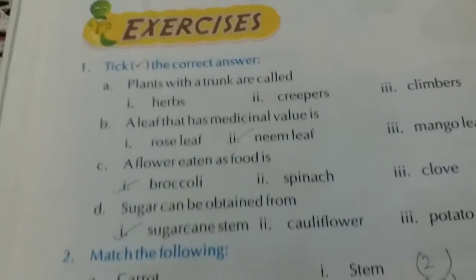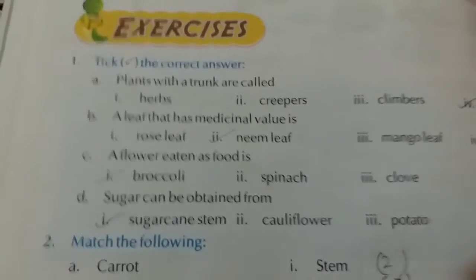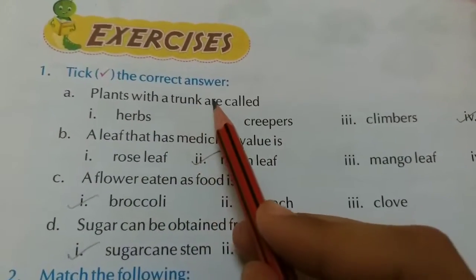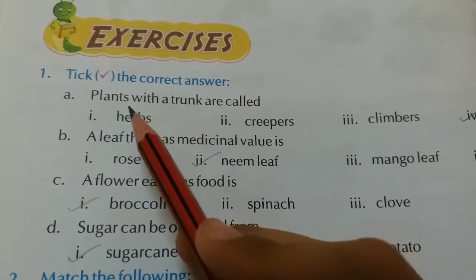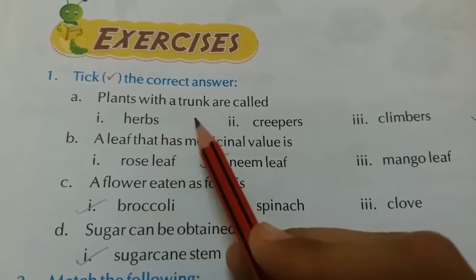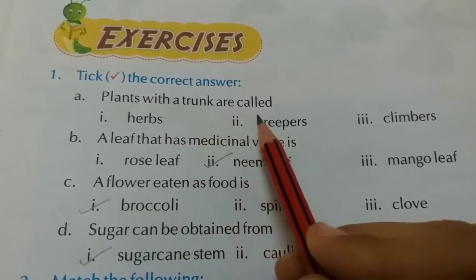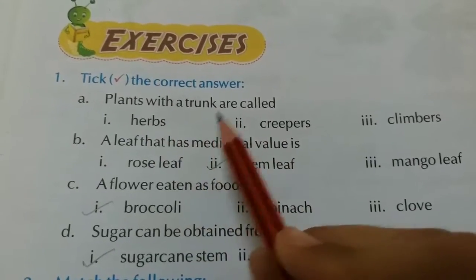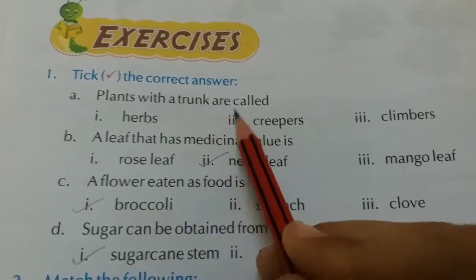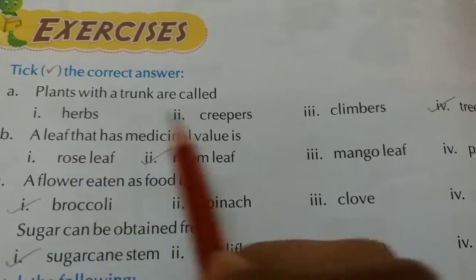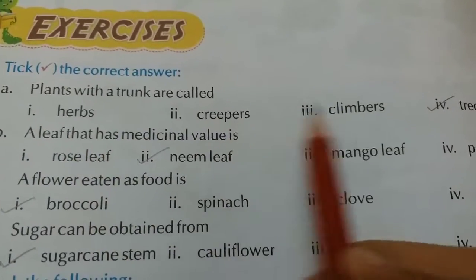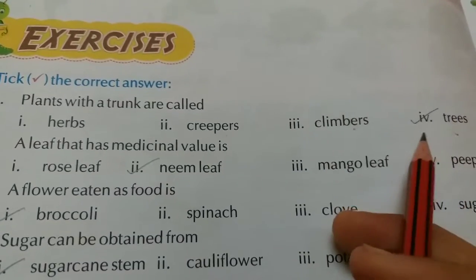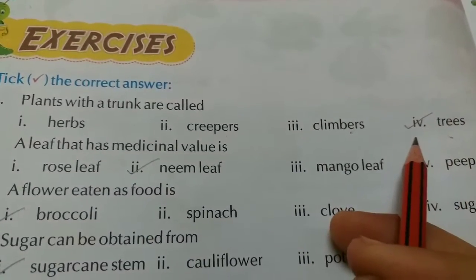Moving towards the exercise, part one: tick the correct answer. The first question is — plants with a trunk are called dash. The options are herbs, creepers, climbers, and tree.